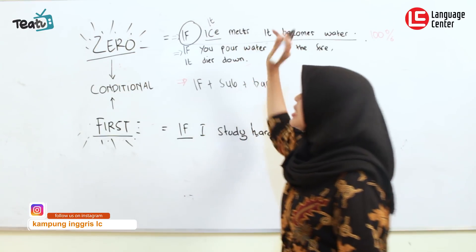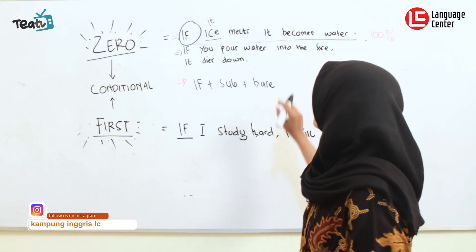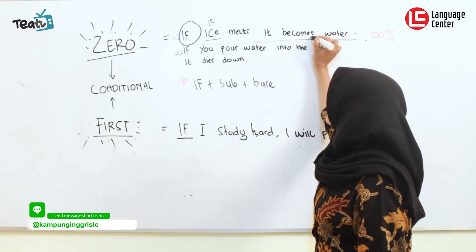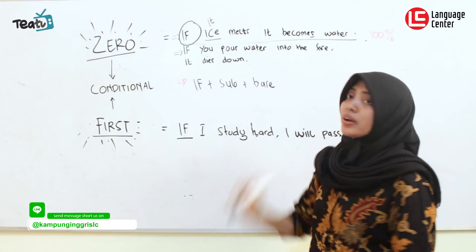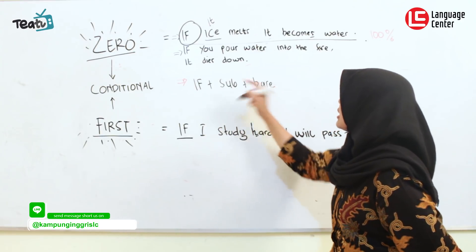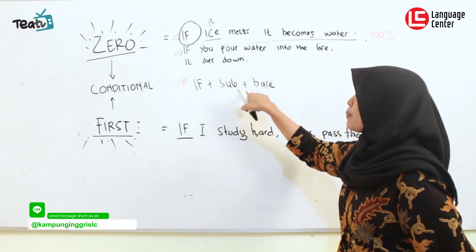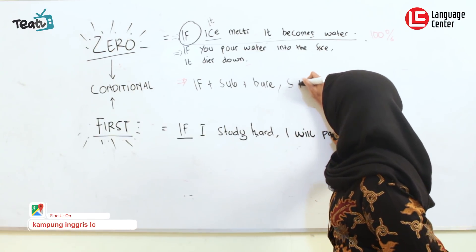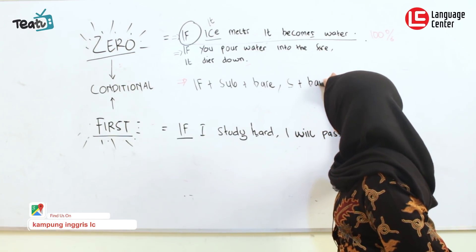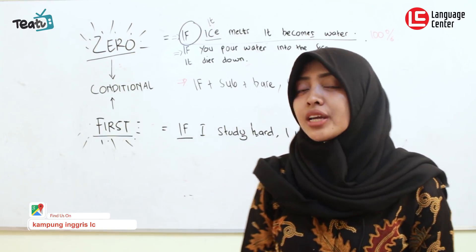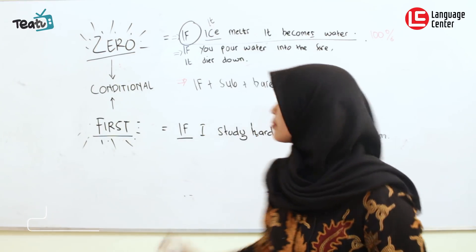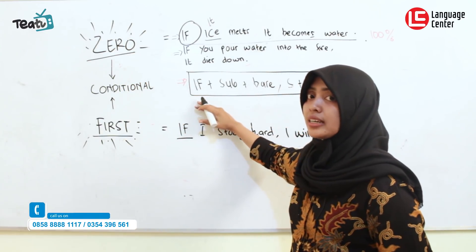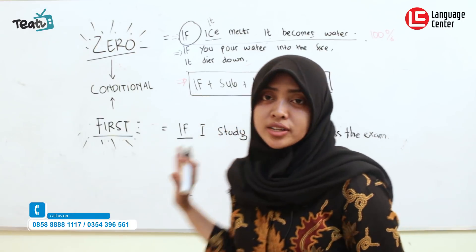It becomes water — 'becomes' uses s- because the subject is 'it'. So the pattern is: If + subject + verb (base or s/es), comma, subject + verb (base or s/es). So when making the zero condition, the structure is subject followed by present form, comma, and present form.